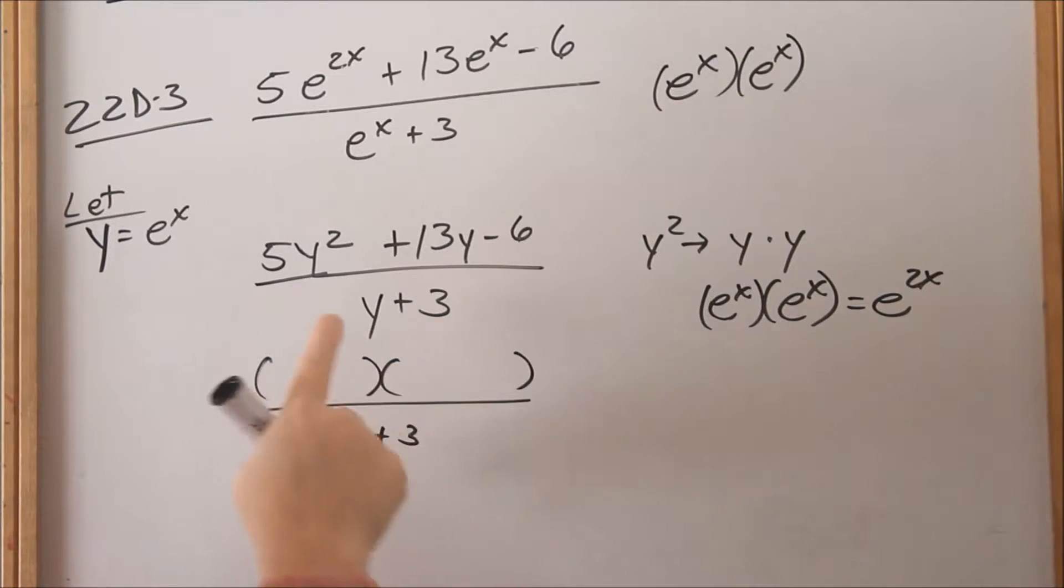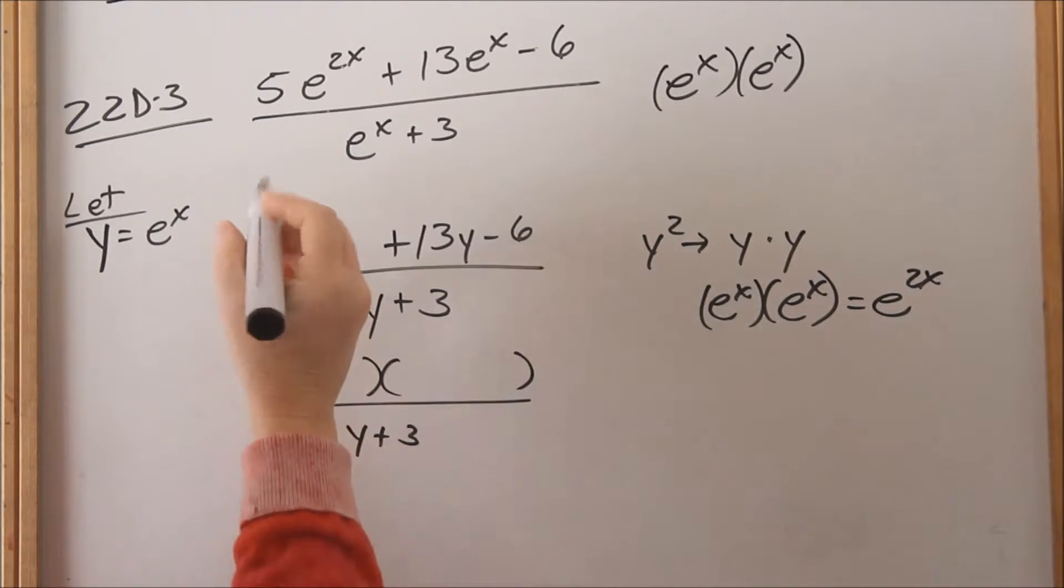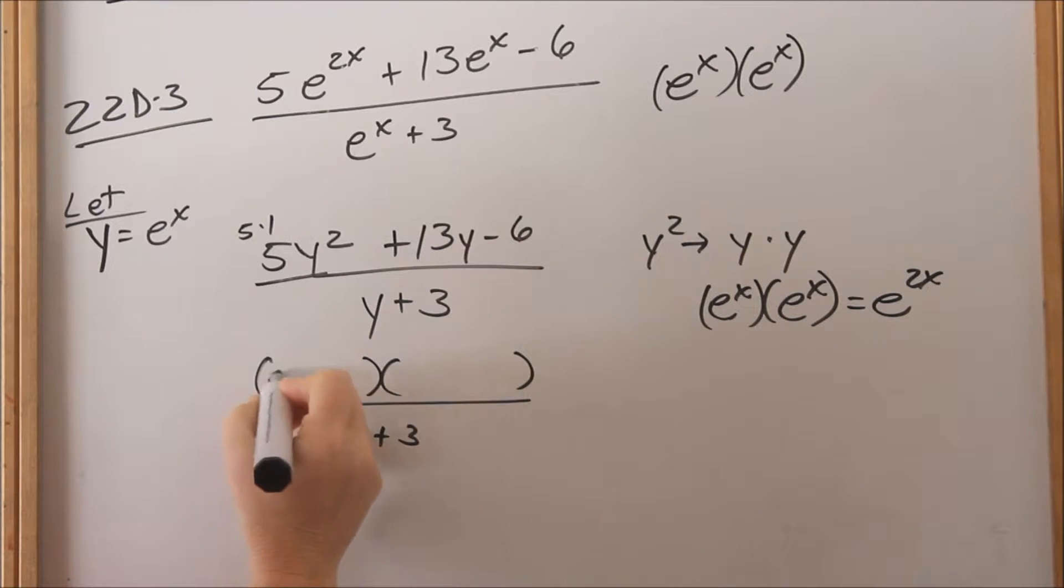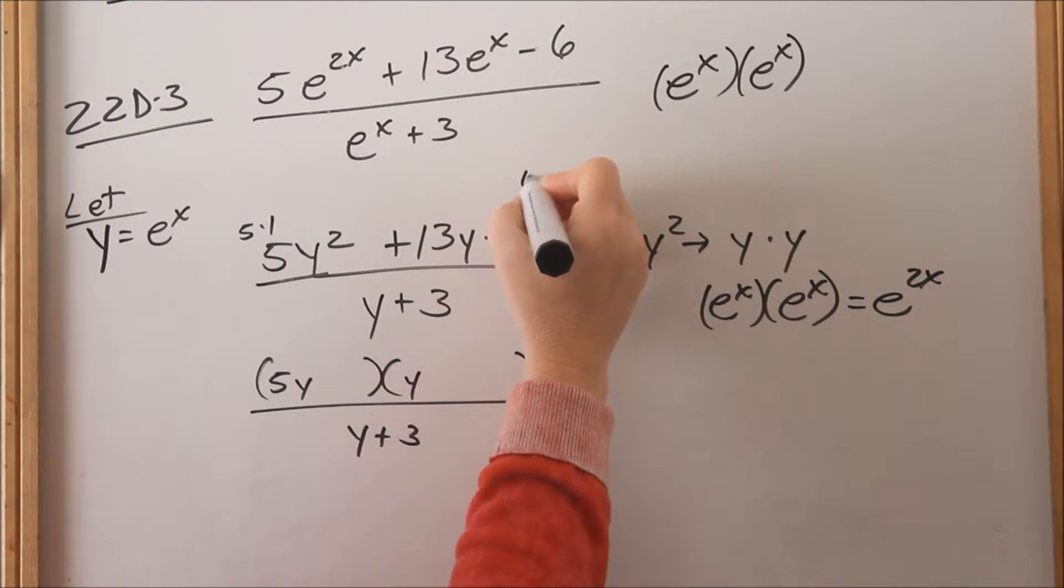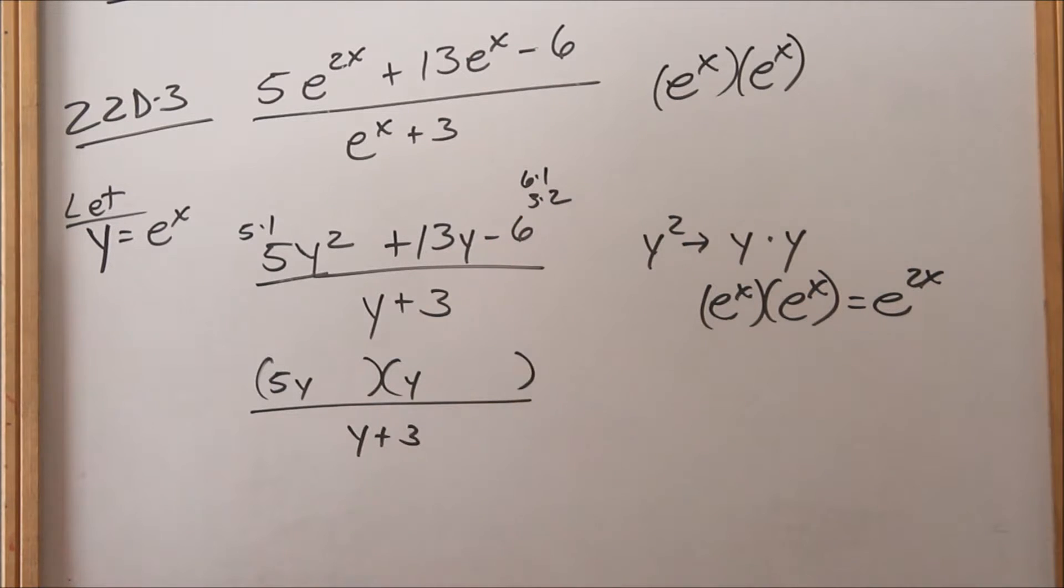There's only one set of factors for 5: 5 times 1. So one will be 5y, one will be y. I usually don't put in my positives and negatives until the end. For 6, I can either pick 6 and 1, or 3 and 2.